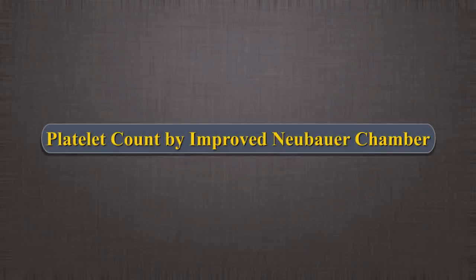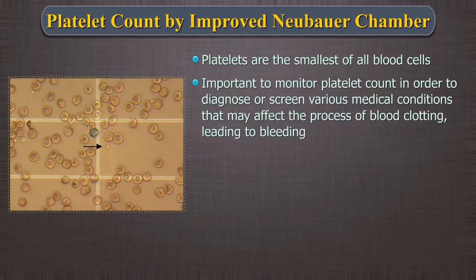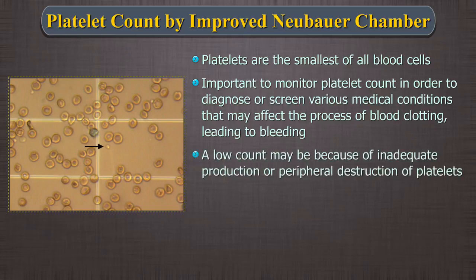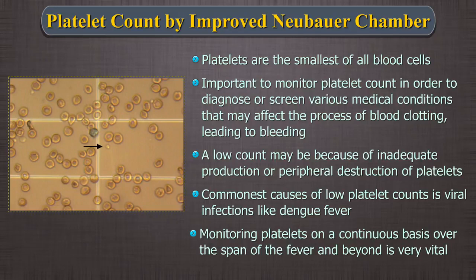Platelet count by improved Neubauer chamber. Platelets are the smallest of all blood cells. It is important to monitor platelet count in order to diagnose or screen various medical conditions that may affect the process of blood clotting leading to bleeding. A low count may be because of inadequate production or peripheral destruction of platelets. One of the commonest causes of low platelet counts is viral infections like dengue fever. Monitoring platelets on a continuous basis over the span of the fever and beyond is very vital. Hence, it is important to thoroughly understand the counting process.